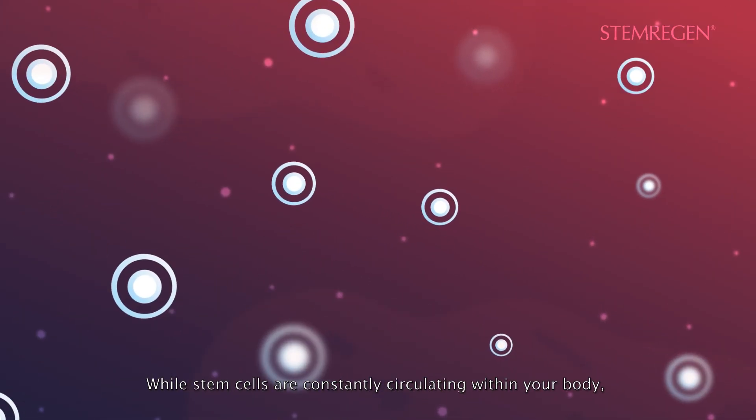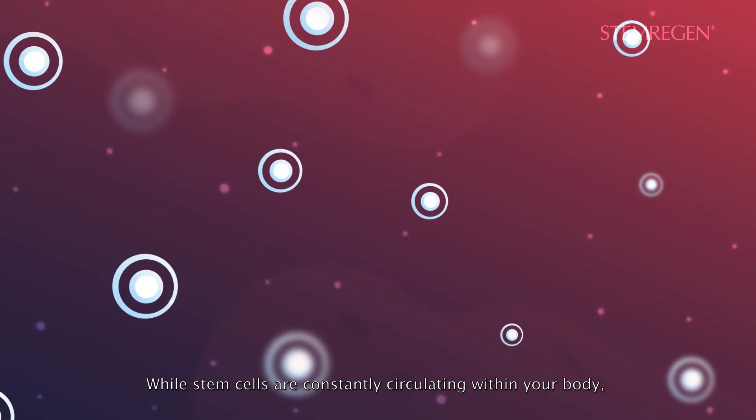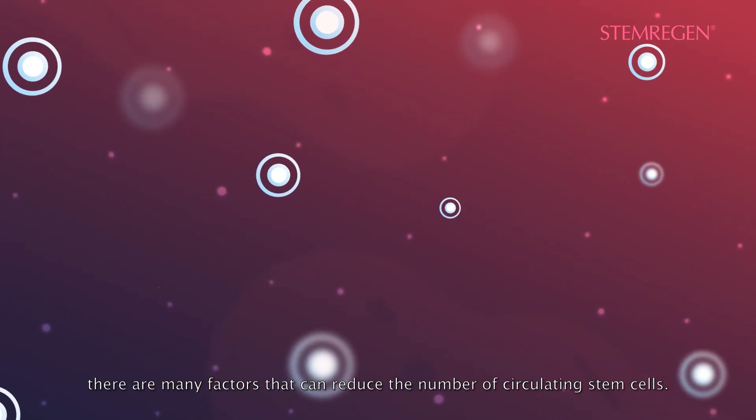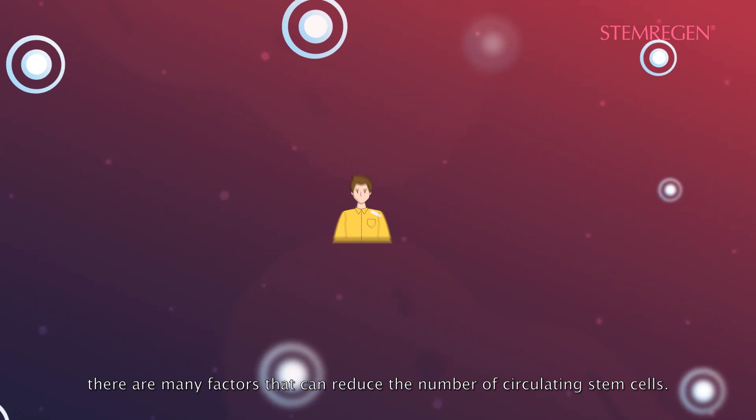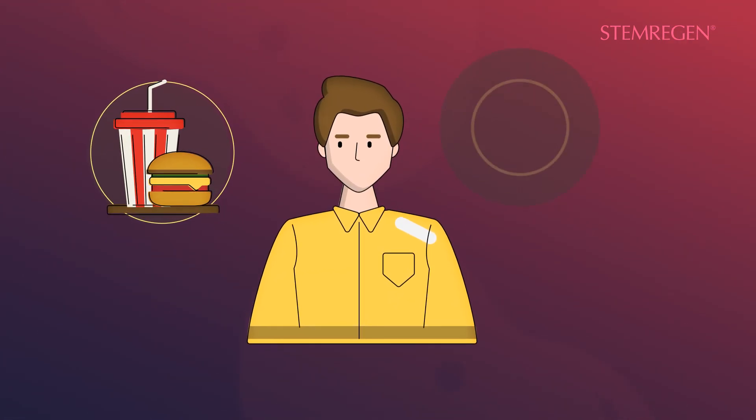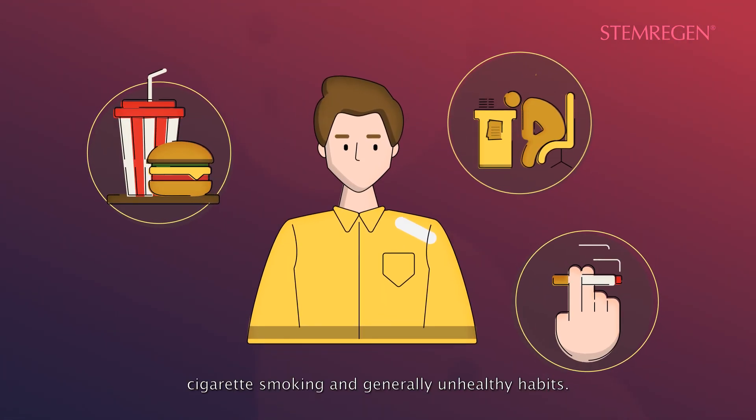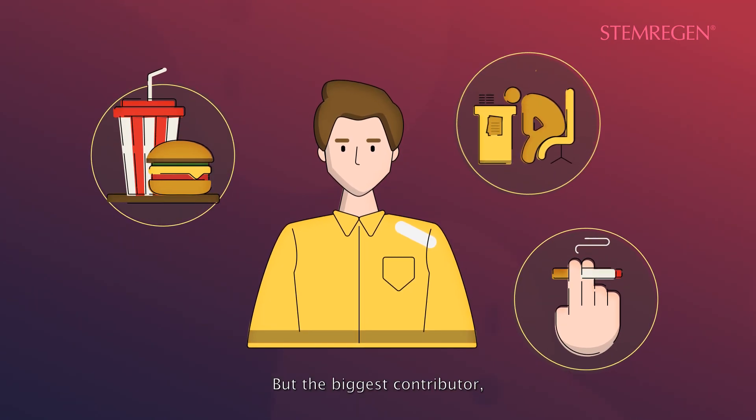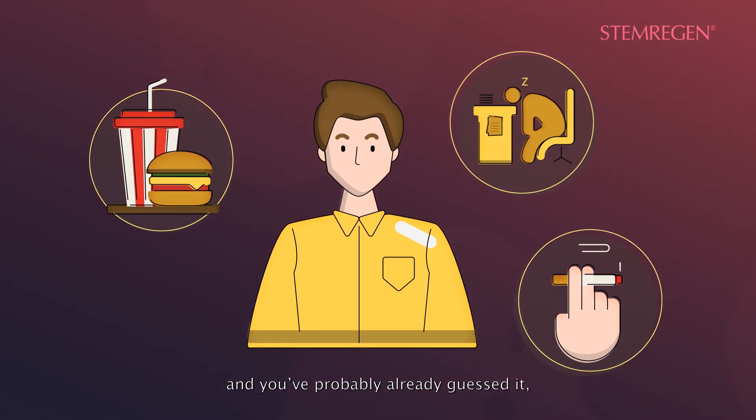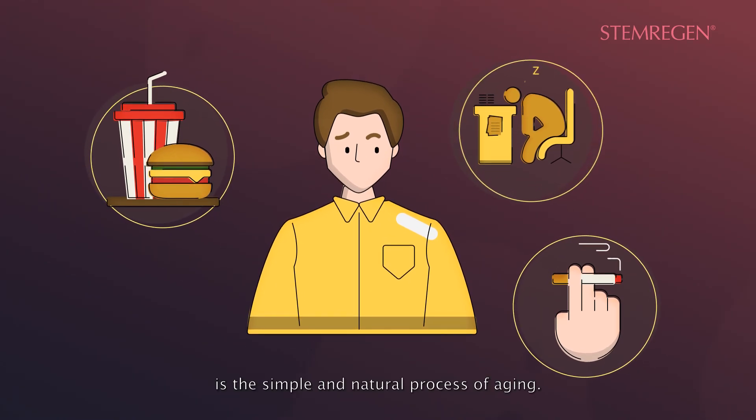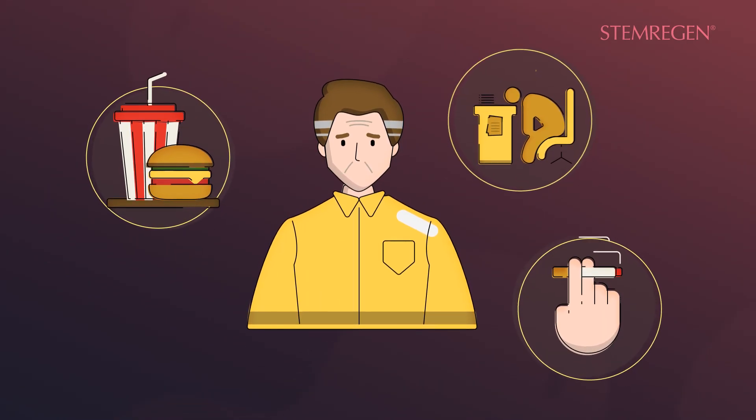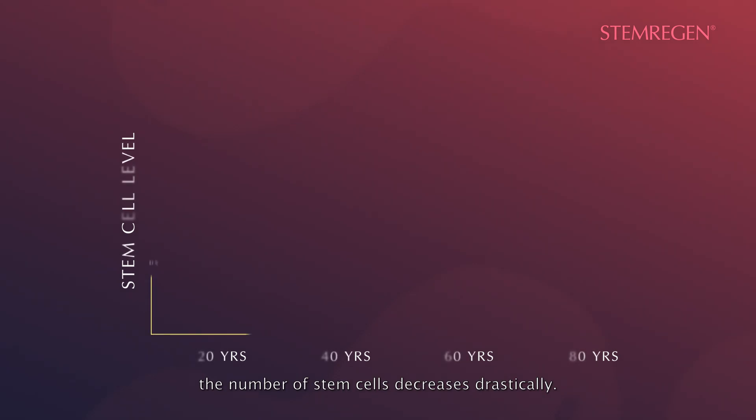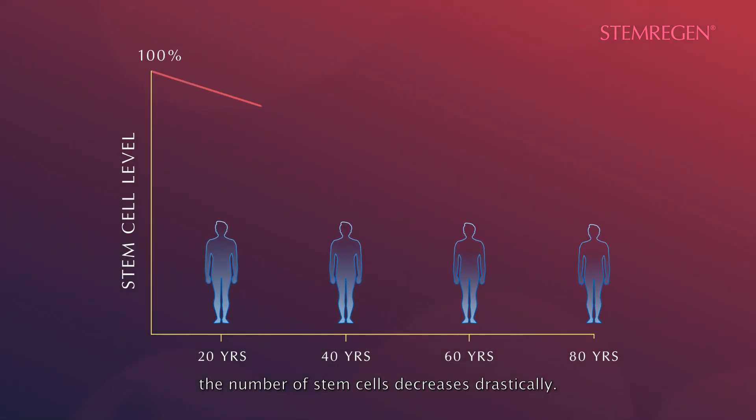While stem cells are constantly circulating within your body, there are many factors that can reduce the number of circulating stem cells. These include a poor diet, lack of sleep, cigarette smoking, and generally unhealthy habits. But the biggest contributor, and you've probably already guessed it, is the simple and natural process of aging. As our body ages, the number of stem cells decreases drastically.